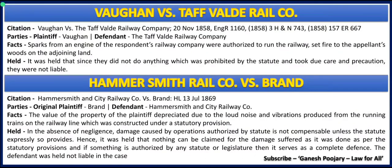In both these cases, there was no nuisance or negligence by the railway company. Whatever they did was done under statutory authority, and hence the general defense of statutory authority was available to the railway companies. But what happens when there is negligence or actionable nuisance? That is what we will understand with the next two case laws.